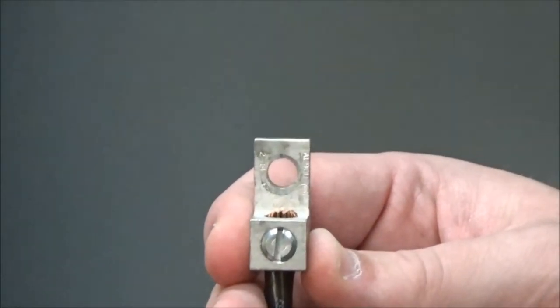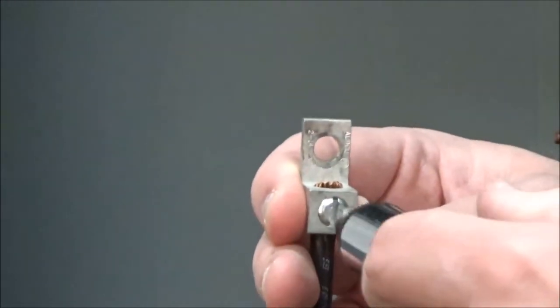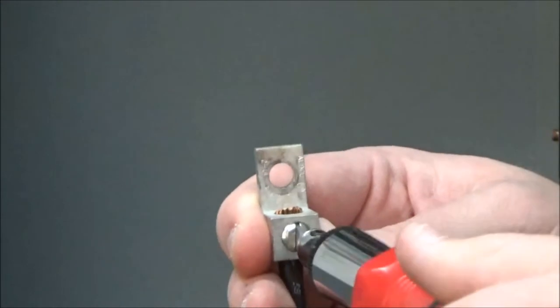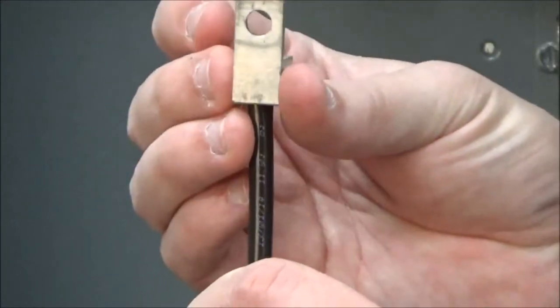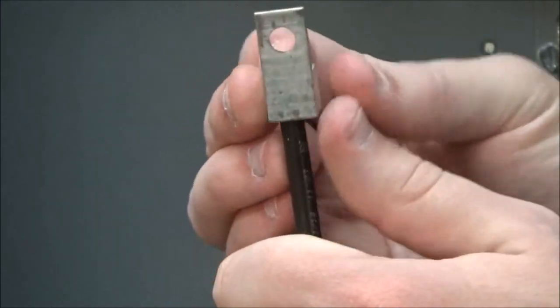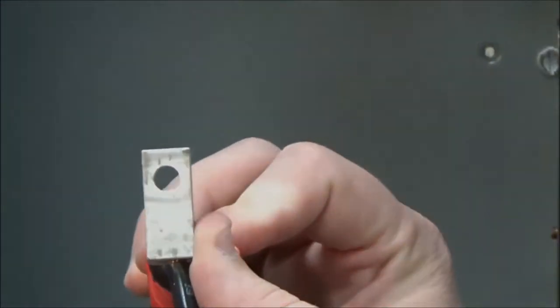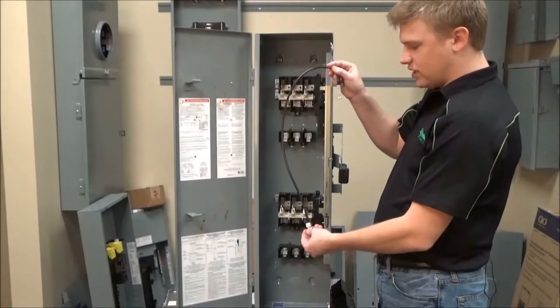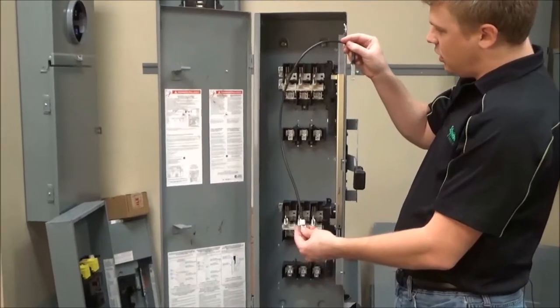You will then loosen the mechanical lug on the jumper wires and turn it 180 degrees, and then re-tighten so that it faces the other way. Once you have rotated the mechanical lug 180 degrees...